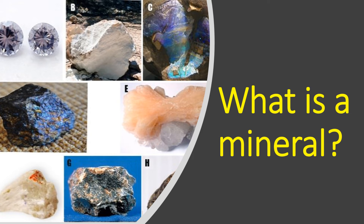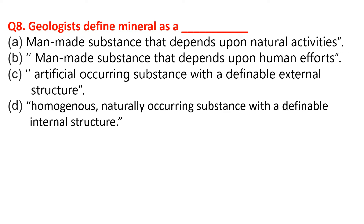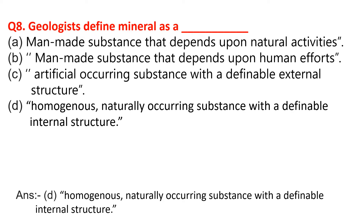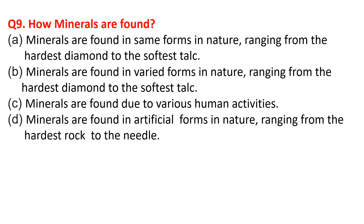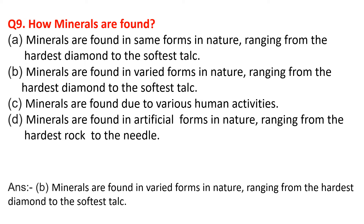Now, what is a mineral? It is very important to know about the chapter precisely. Geologists define mineral as — the correct option is Option D — a homogeneous, naturally occurring substance with a definable internal structure, meaning minerals occur naturally due to their internal structure. Minerals are formed in varied forms in nature, ranging from the hardest diamond to the softest talc.